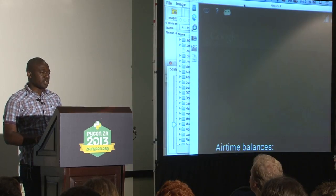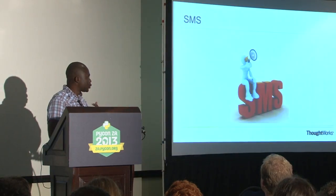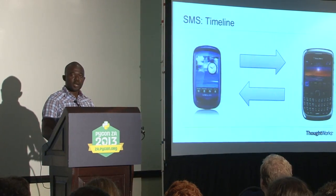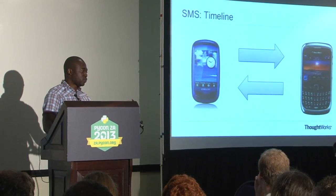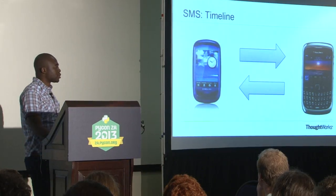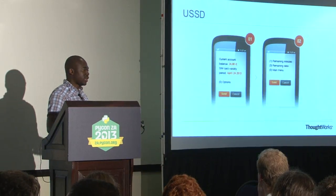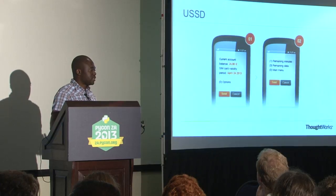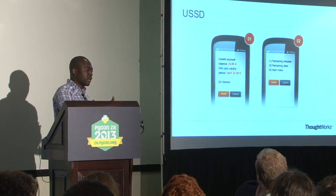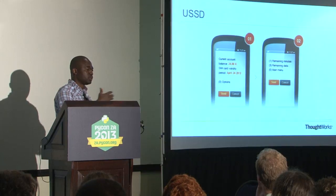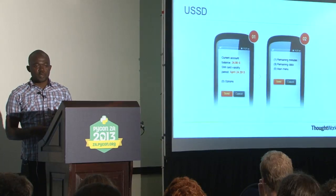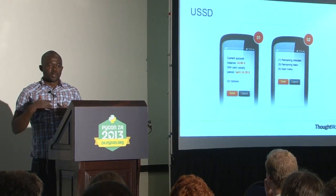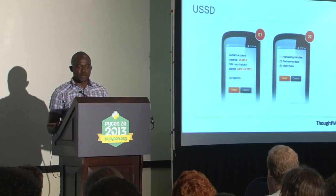The main difference between USSD and SMS is that the interaction between you and the application on the other side is live. When I send you an SMS, you can read it in one hour or in the daytime — there's no way for me to control when I get a response back. USSD is totally different because there's a live connection between the two machines. I send a message and get a response immediately — no lag, more control, more real-time.